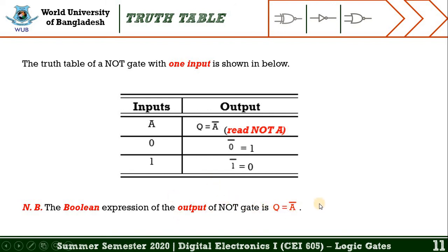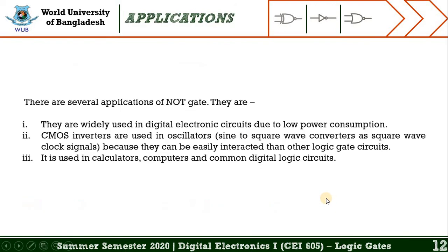The Boolean expression of the output of the NOT gate is read as 'not A' or 'A bar'. Like other gates, the NOT gate has applications and is widely used in digital electronic circuits due to low power consumption.